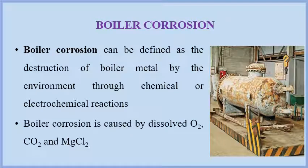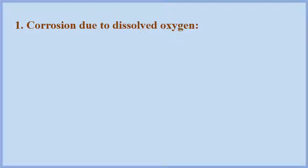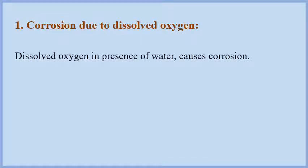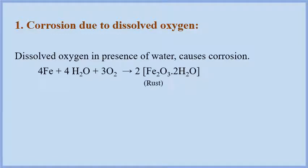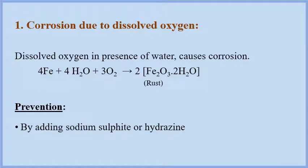If boiler feed water contains dissolved oxygen, carbon dioxide, or magnesium chloride, then it results in boiler corrosion. The first cause is corrosion due to dissolved oxygen. Oxygen is a good oxidant. The presence of oxygen in boiler feed water results in the oxidation of boiler metal into metal oxide, i.e., iron into iron oxide. This type of corrosion can be prevented by removing oxygen from the water, either by adding sodium sulphate or hydrogen to the water, or by mechanical deaeration method.